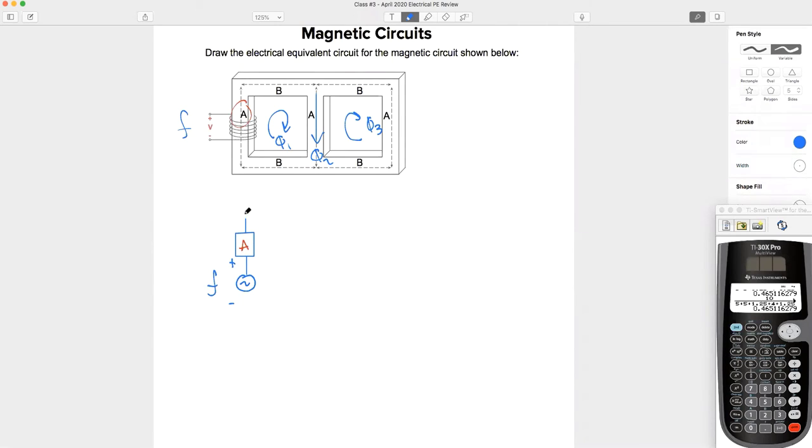Okay, so that's our first reluctance. All right, next, we're going to come up and around and we've got a series reluctance value. What reluctance value is this? This is B, right?